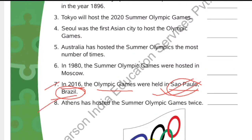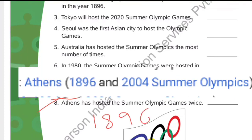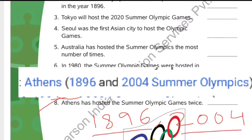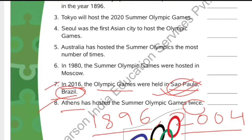Number 8: Athens has hosted the Summer Olympics twice. The answer is true. It was held in Athens in 1896 and again in 2004. So the answer is true.